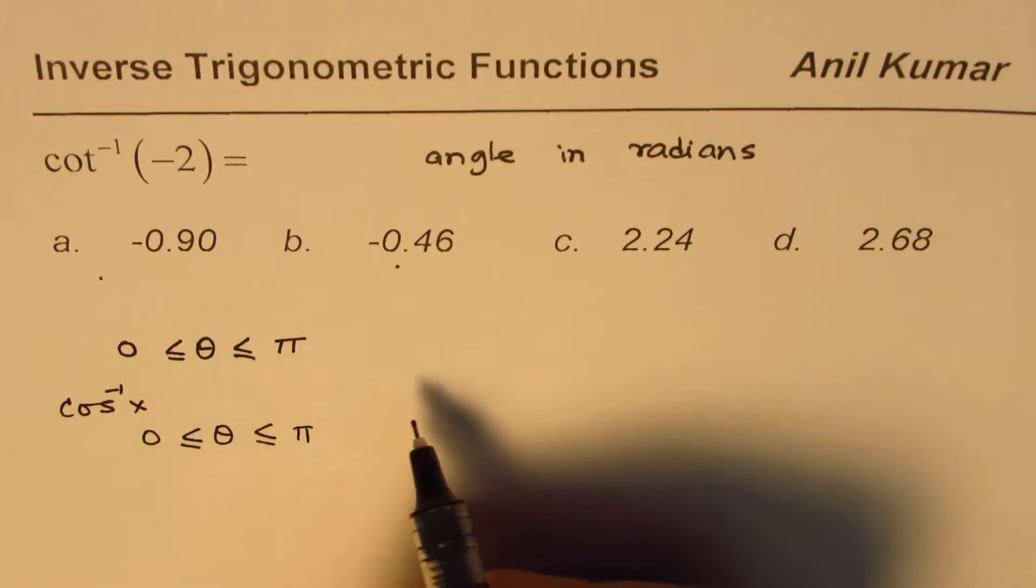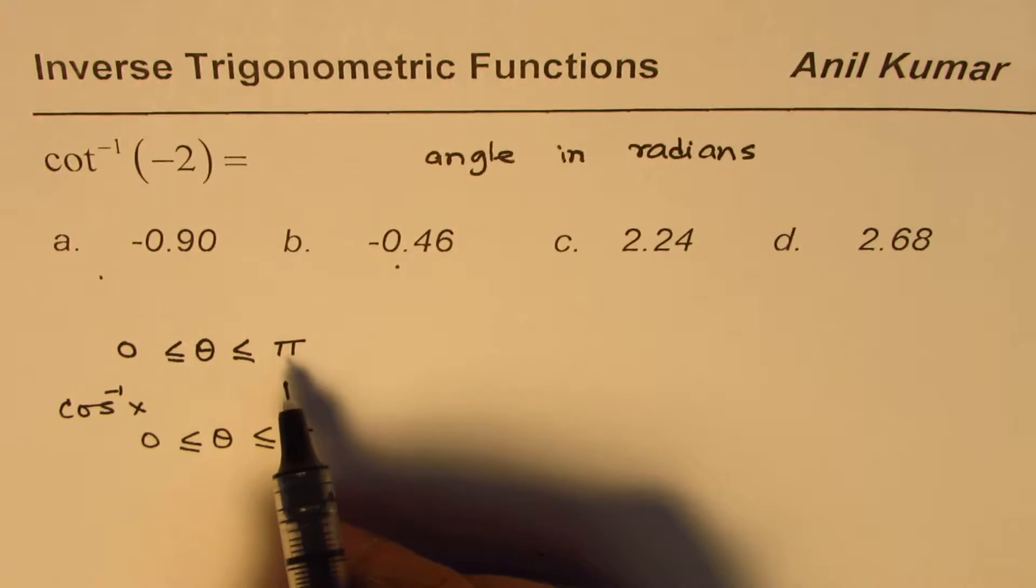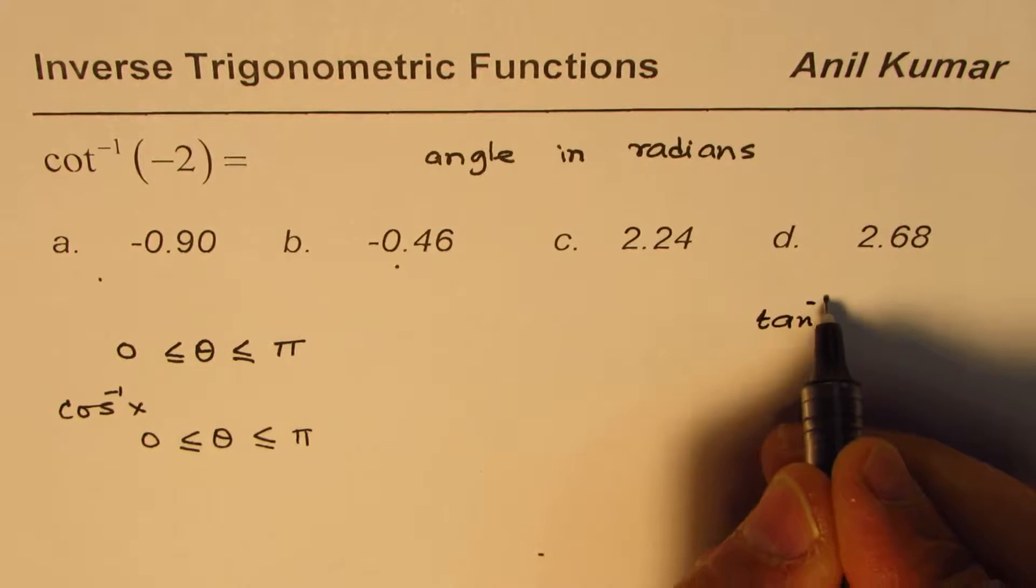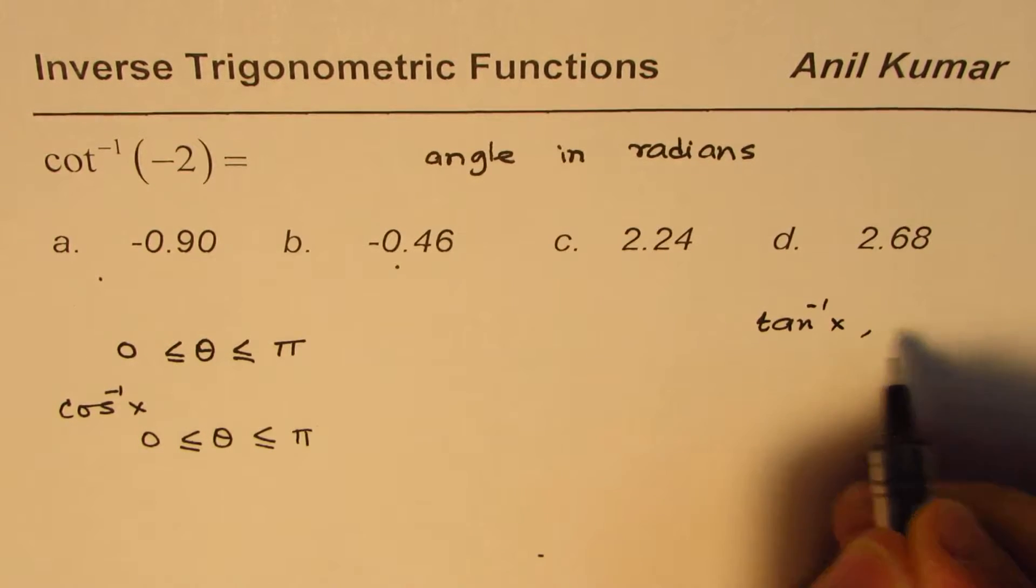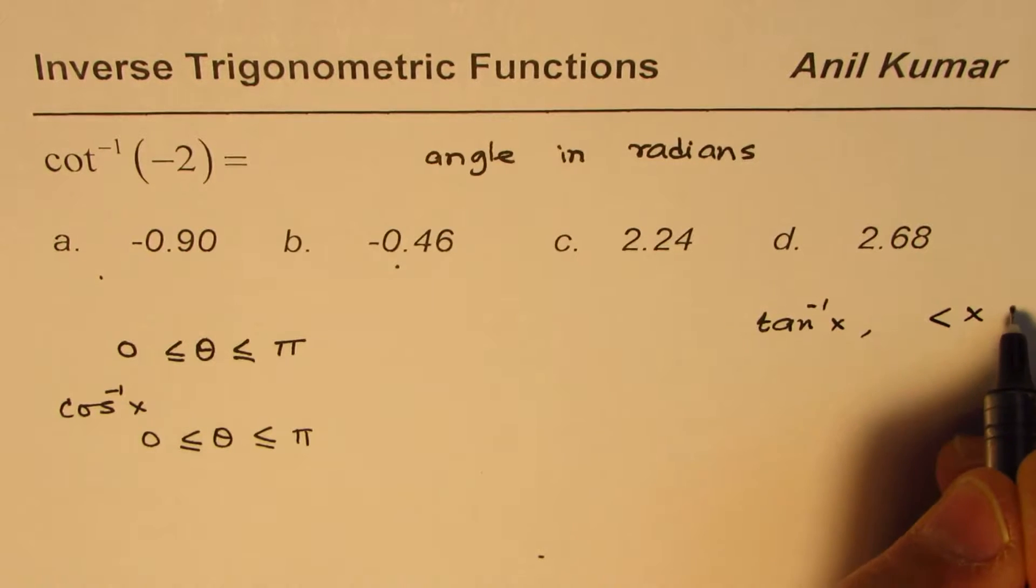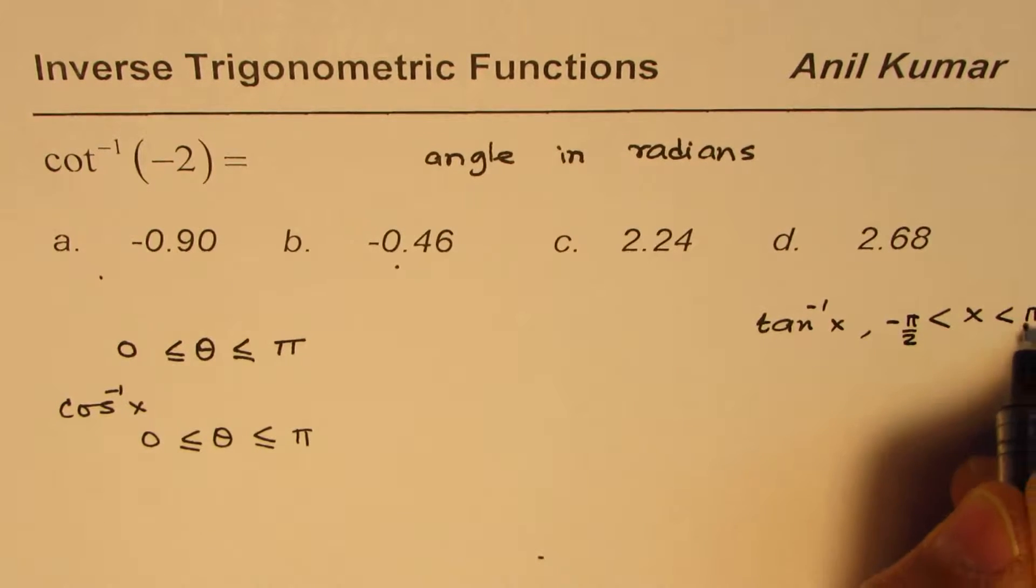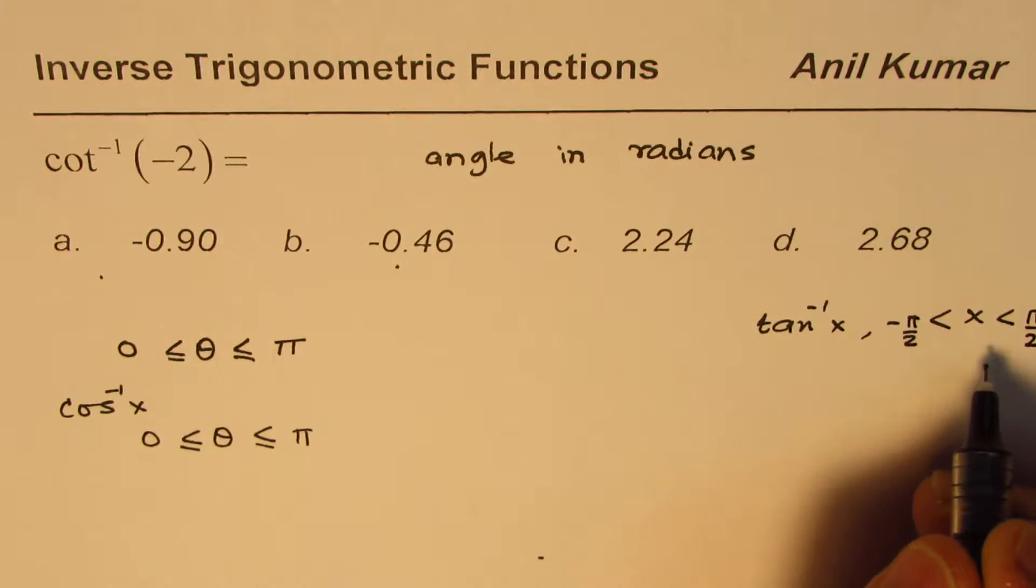So in that case, at times you may get the wrong result, since for tan inverse x the domain for x is between minus pi by 2 to pi by 2, right?